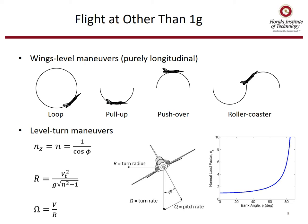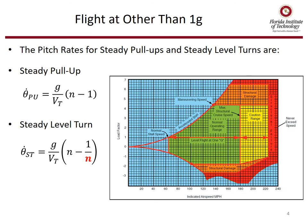We can derive equations for the turn radius to be true airspeed squared over g divided by the square root of n squared minus 1, or the turn rate omega is our speed V over the turn radius. The plot on the lower right shows normal load factor as a function of bank angle to sustain a level turn. We have equations for pitch rates depending on whether it's a wings-level steady pull-up or a steady level turn with a bank angle.